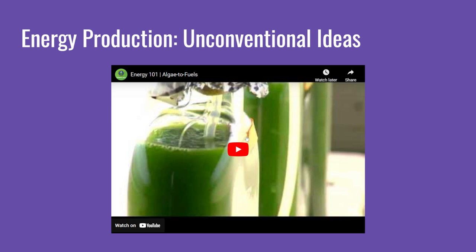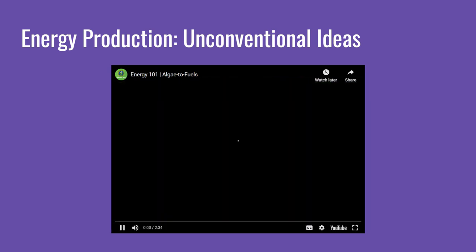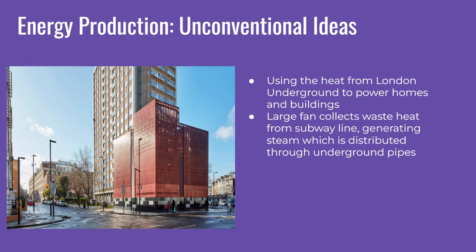Some unconventional ideas include converting algal biomass to fuels, though I'm not going to let this video play. Another unconventional idea is using heat from transportation systems to heat buildings, like from the London Underground, where a large fan collects waste heat from the subway line, generating steam which is distributed through underground pipes.